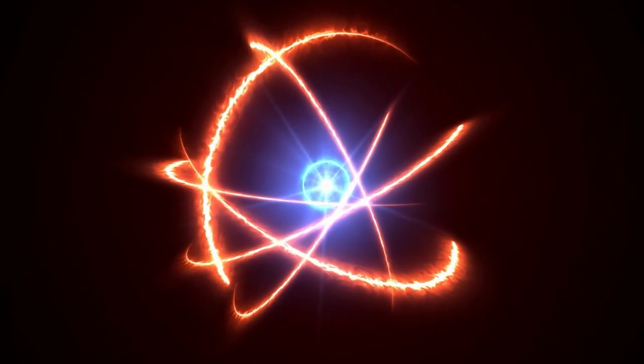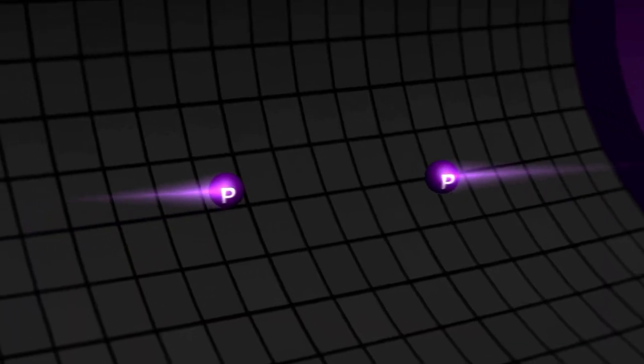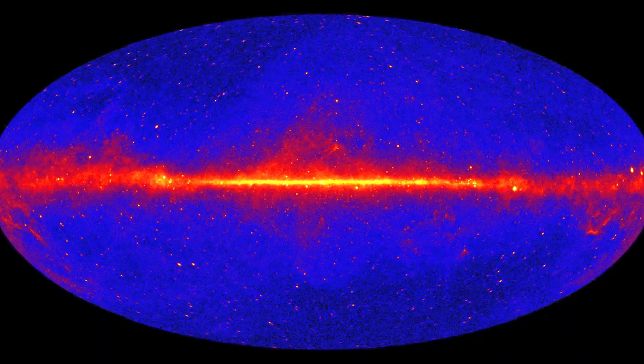Another approach involves looking for indirect signs of dark matter annihilation. When dark matter particles collide and annihilate, they produce high-energy gamma rays. Observatories like the Fermi Gamma Ray Space Telescope scan the heavens for these elusive signals.